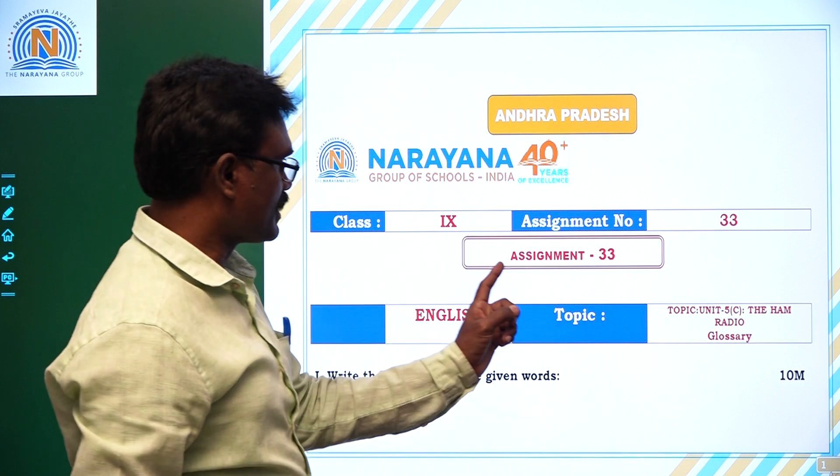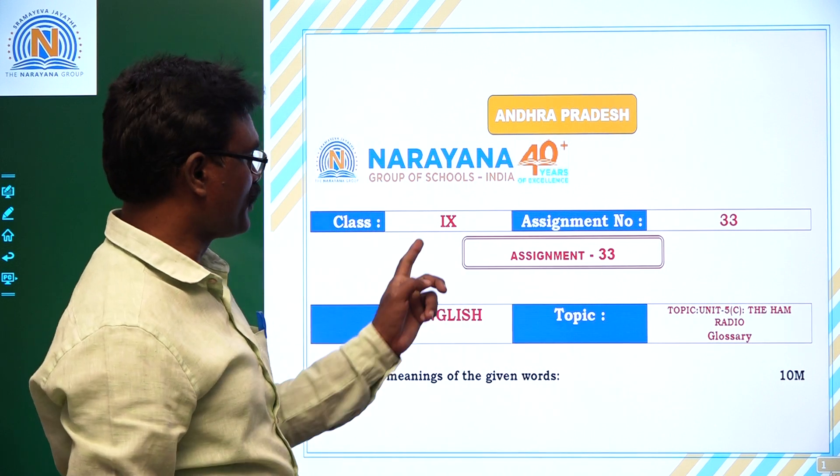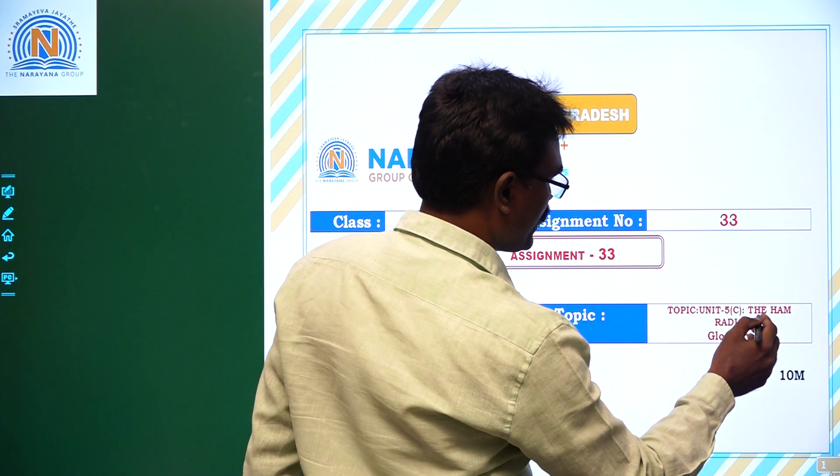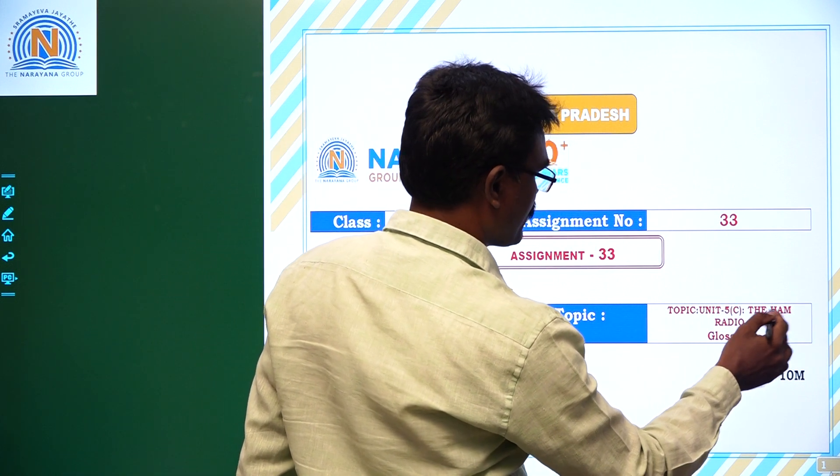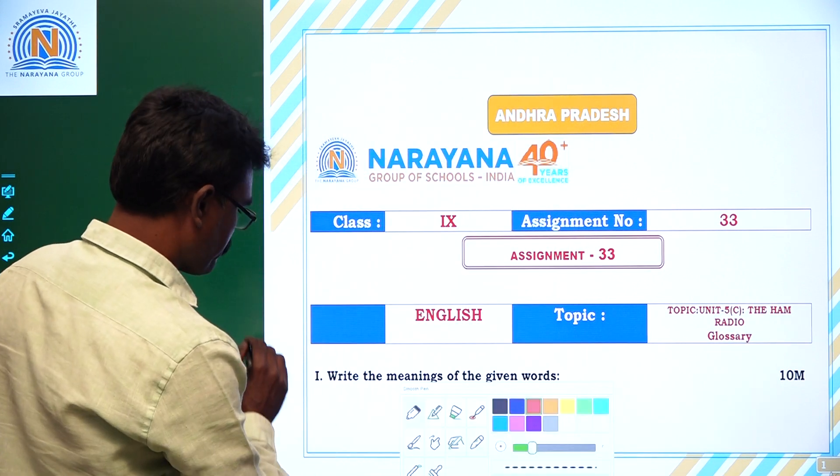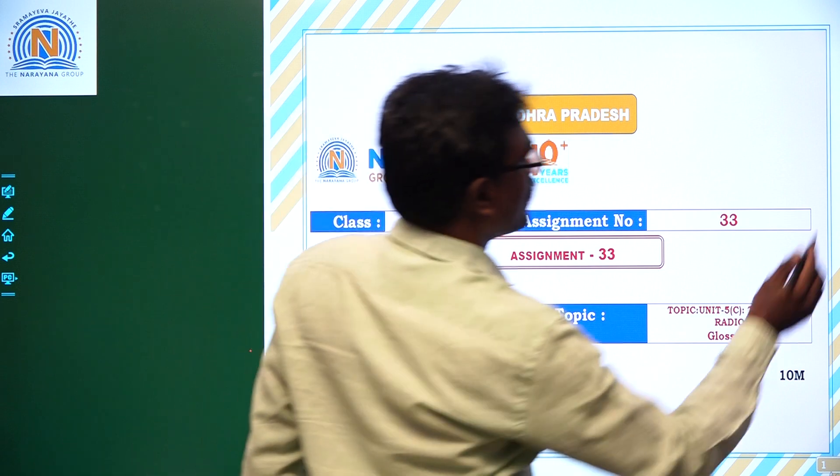Hi children, this is assignment number 33 of 9th class, subject English, topic unit 5a, the ham radio. Glossary is given, meanings. Write the meanings of the given words.